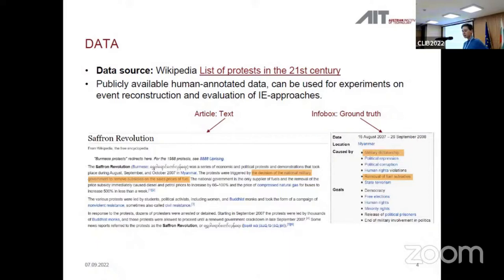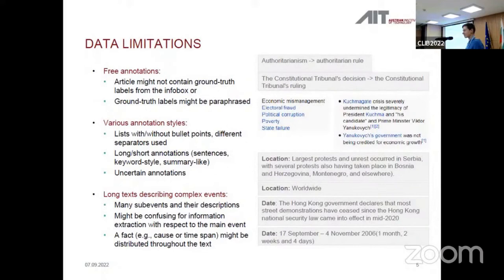The advantage of the data is that we have kind of human annotations. Here you can see on the right side, it's called Infobox section on Wikipedia page. From many of the articles, we can find the causes. And we also can find these causes, maybe paraphrased in the text. So we can construct a training or evaluation dataset for this data, and that's what we actually tried to do.